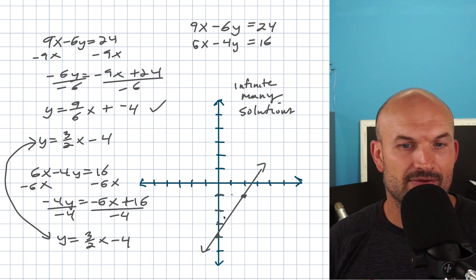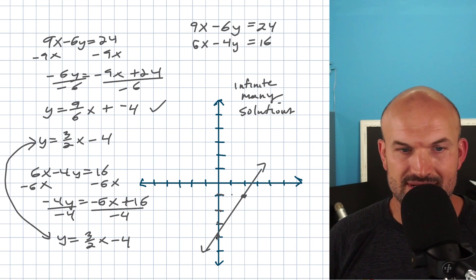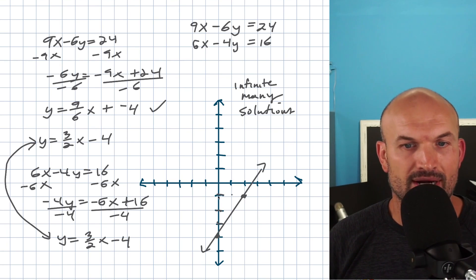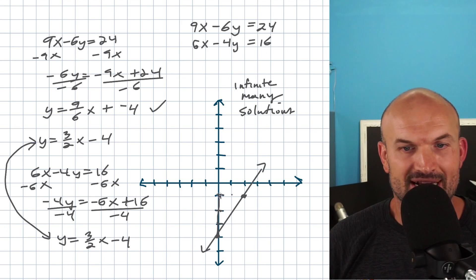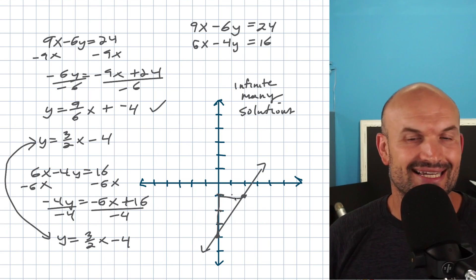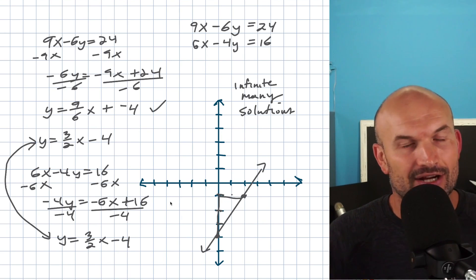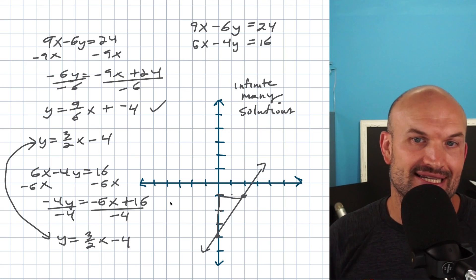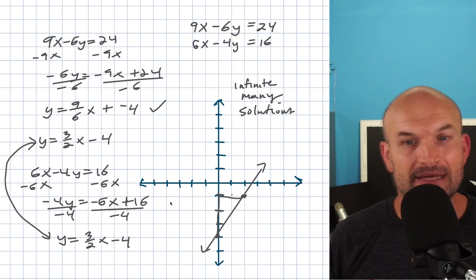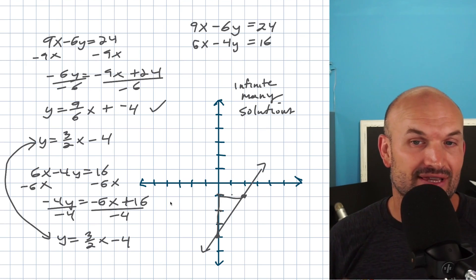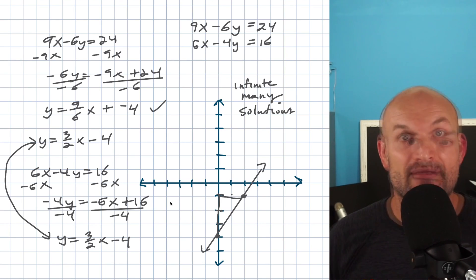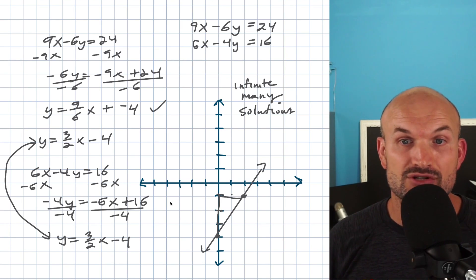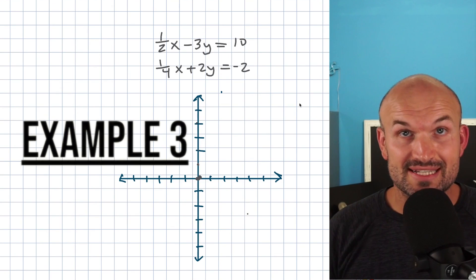Let's go ahead and graph this so we have an idea of what this system looks like. It is going to be the exact same line, so therefore it will be infinitely many solutions. I just went ahead and found the y-intercept at negative 4, then went up 3 over 2 to find my next point. When connecting those, I only needed to do it once because it's the same line. Whenever this does happen, that's going to give us a solution of infinitely many solutions.